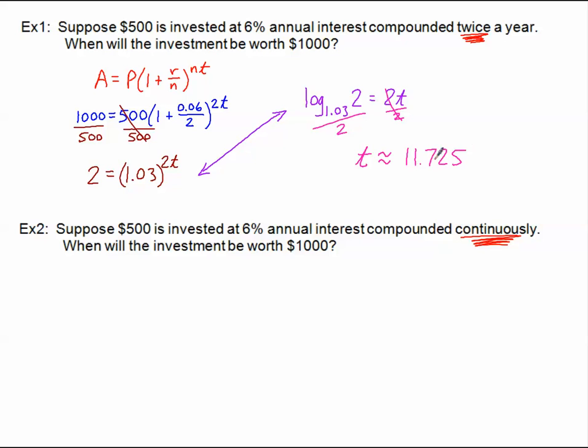I get 11.725 years. So just under 12 years, we will have doubled our money. Not a bad deal. 6% is a pretty good interest rate right now.